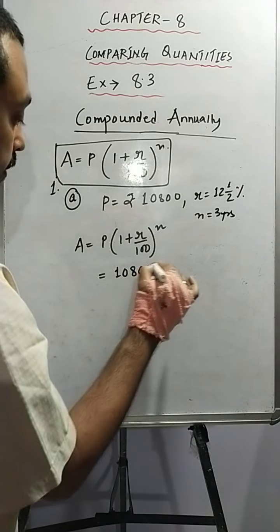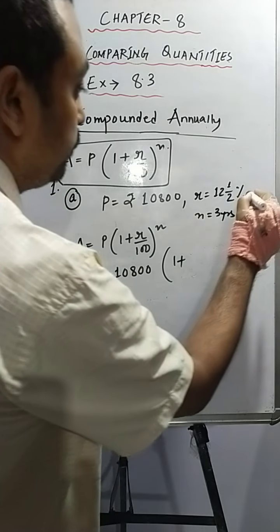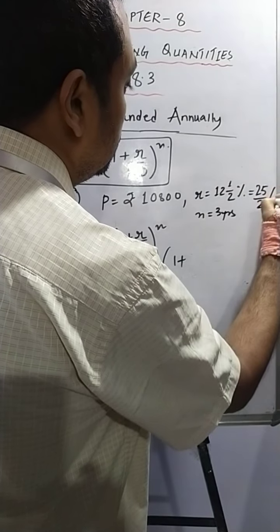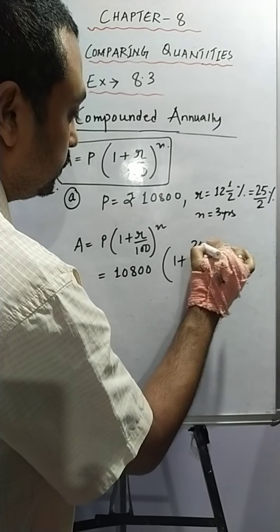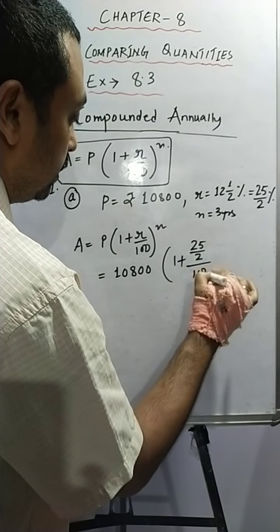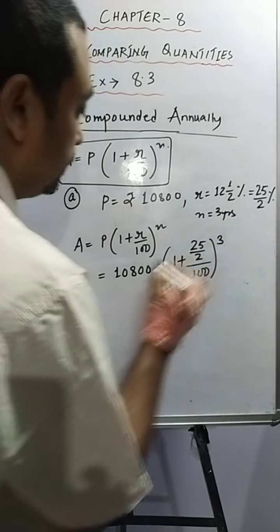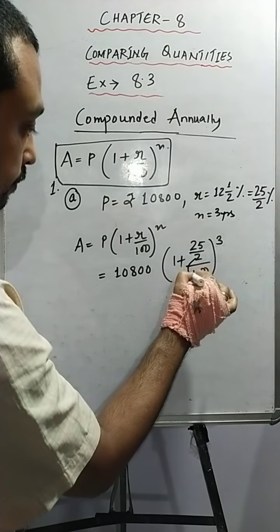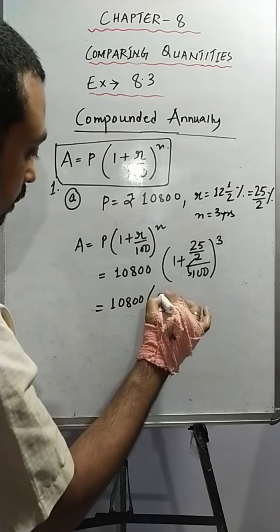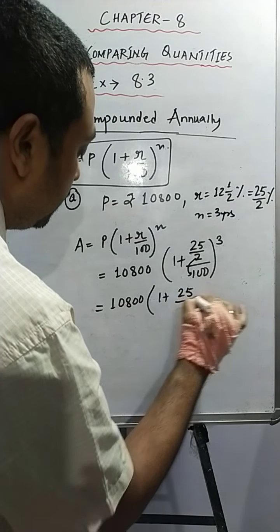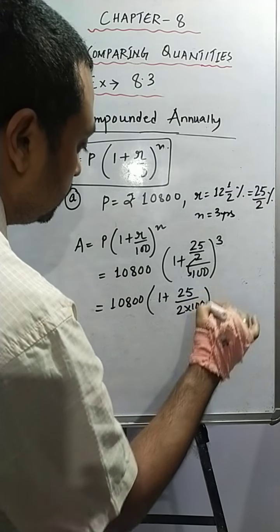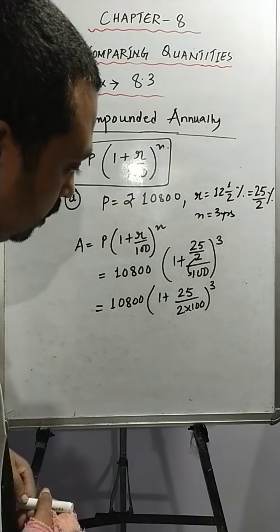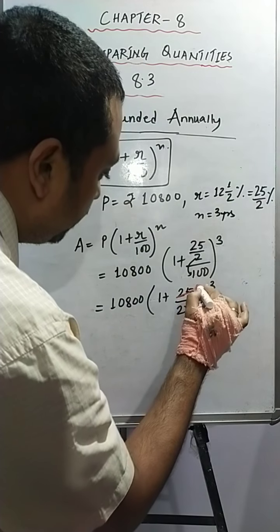P is 10,800. Rate is 12½%, which in improper fraction form is 25/2 percent, so in place of r we write 25/2. The formula becomes: A = 10,800 × (1 + 25/2 × 100)^3. Simplifying, the 2 comes down: A = 10,800 × (1 + 25/200)^3. This reduces to: A = 10,800 × (1 + 1/8)^3.